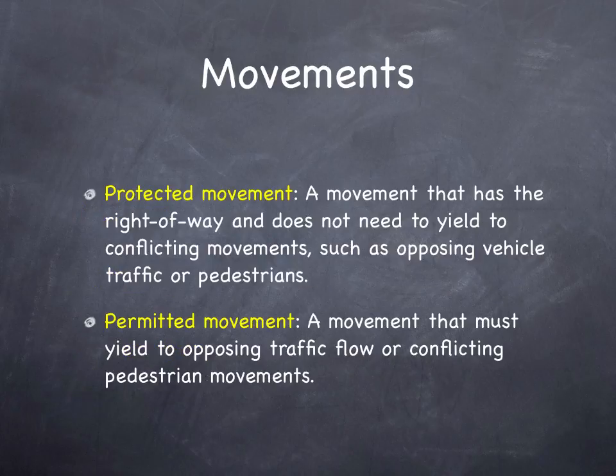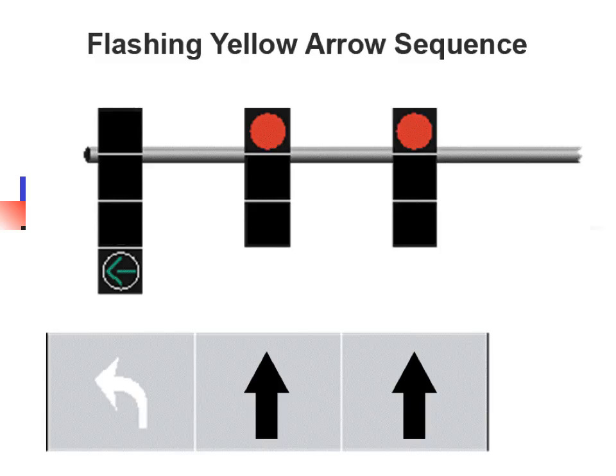There are movements. Protected movements have no conflicting traffic — the movement has the right of way and doesn't have to yield to opposing vehicles or pedestrians. The permitted movement is most common for left turns. If you're making a left turn on a green ball without a green arrow, you have permission to make that movement so long as it's safe, but you are not protected.